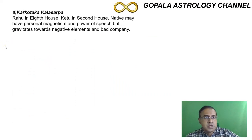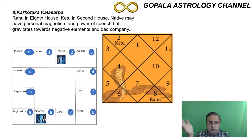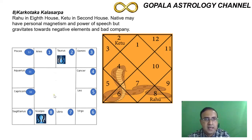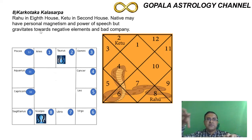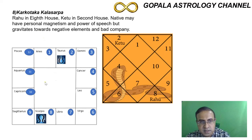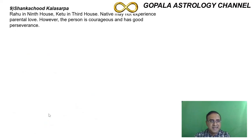In Karkota Kala Sarpa Dosha, since Ketu gets into the second house of family, the person will be secretive and move away from the family, finding happiness with negative friends. The health of this person is always afflicted, and diseases in the private parts are possible because the eighth house represents the private parts. The next combination is called Shankachuda Kala Sarpa Dosha — when Rahu goes to the ninth house and Ketu comes to the third house. The ninth house is about the religious belief system and foreign long-distance journeys, so the person will move to a foreign land.